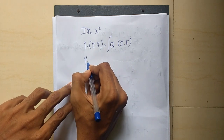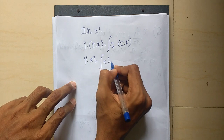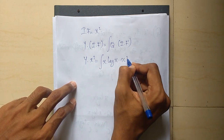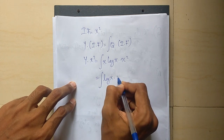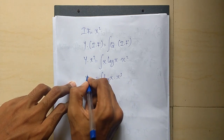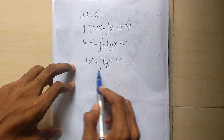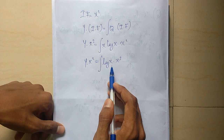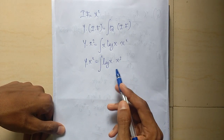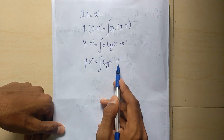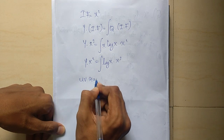We substitute y into x squared equals the integral of x cubed log x dx. This requires integration by parts using the uv rule, since we have two functions.